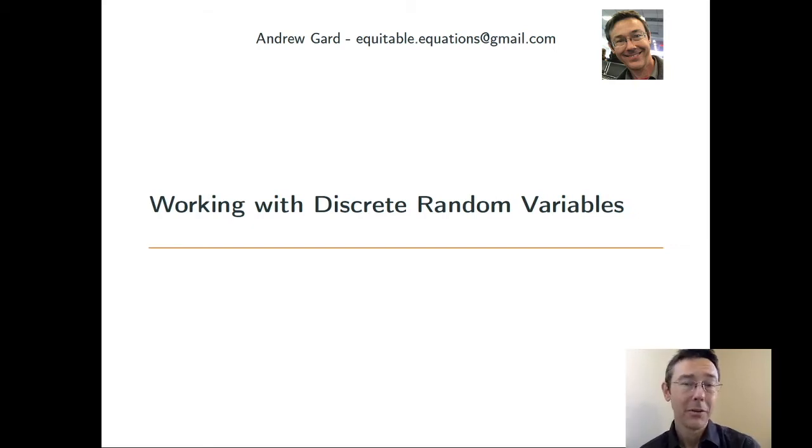Remember that a random variable is a variable whose value is going to be defined by some sort of random process. A discrete random variable is one whose outcomes can be listed.